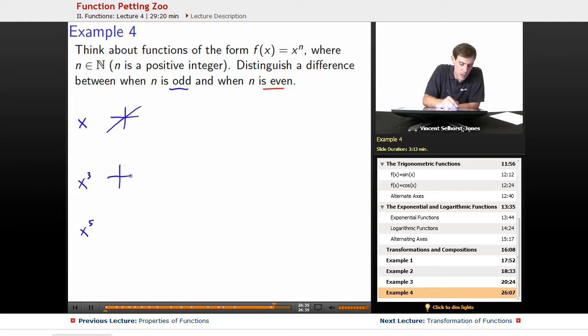x cubed, it blows out pretty quickly. x to the fifth, it blows out even faster, right? By the time it makes it to 2, it's at 2, 4, 8, 16, 32 height. So by the time x to the fifth has an input of 2, it's getting an output of 32. So it blows out really fast.